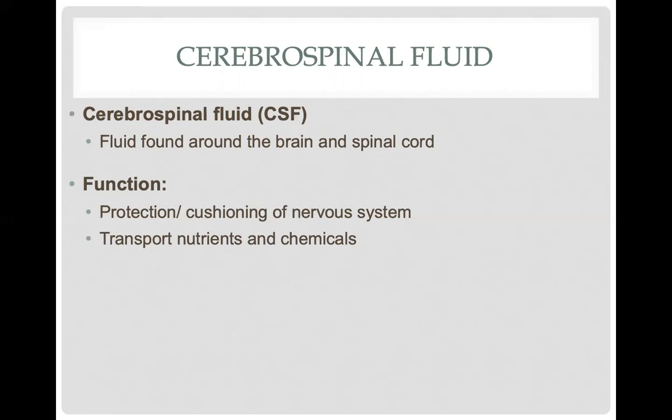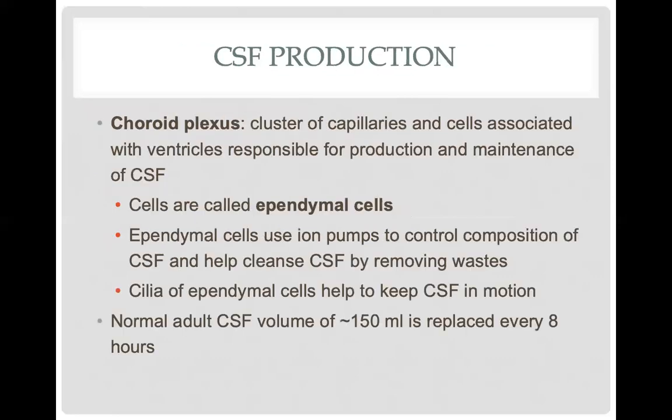That said, just because you have CSF providing buoyancy and protection doesn't mean the brain cannot be damaged — if the force or trauma is significant, the brain will still bounce off the side of the skull and can cause bruising or rupturing of blood vessels. CSF also has a second function: providing nutrients and chemicals for the brain tissue. What produces cerebrospinal fluid is a structure called the choroid plexus, which is highly vascularized and associates with your ventricles, producing CSF directly from your bloodstream.